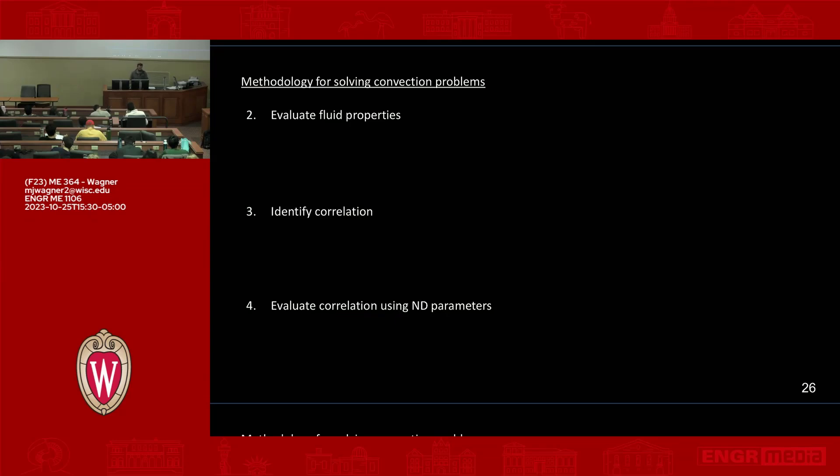Step two is evaluating the fluid properties. Unless it's otherwise specified, you'd evaluate the fluid properties using the film temperature. The film temperature, T film, is effectively the average temperature in the boundary layer. So it's going to be Ts plus T infinity divided by two. It's just your average temperature. It's not actually exactly the average, but it's a good approximation. If the correlation says otherwise, like there's some natural convection correlations that will say don't evaluate at film temperature, evaluate at the ambient temperature or evaluate at the surface temperature, then you would follow what the correlation says. Otherwise use the film temperature.